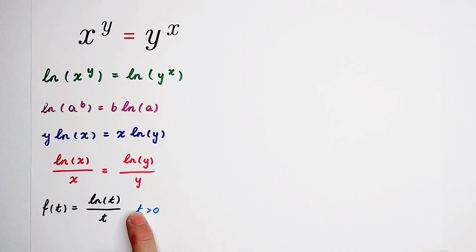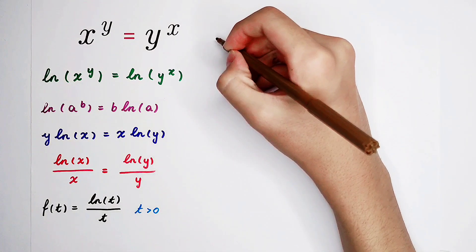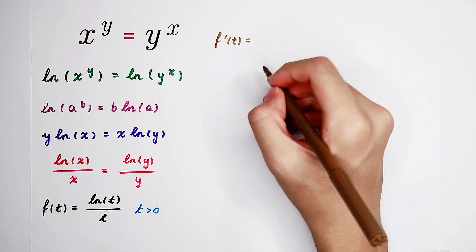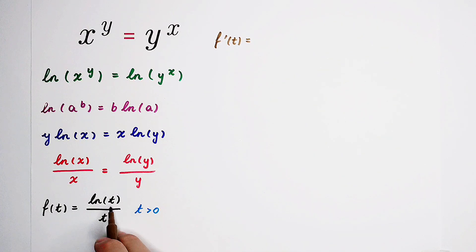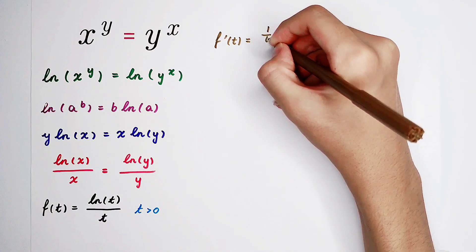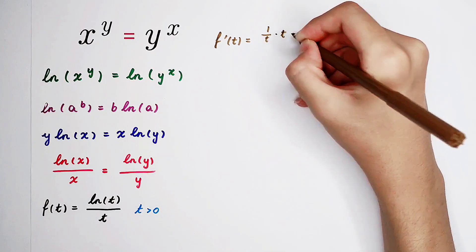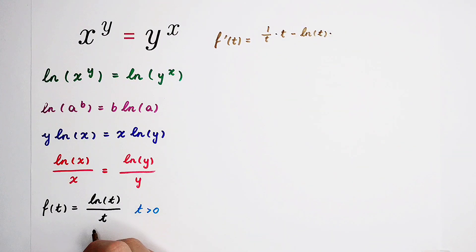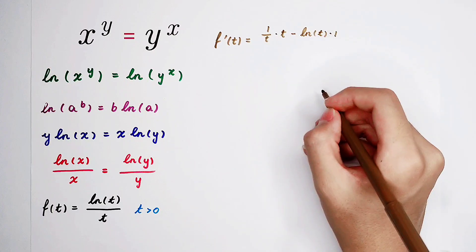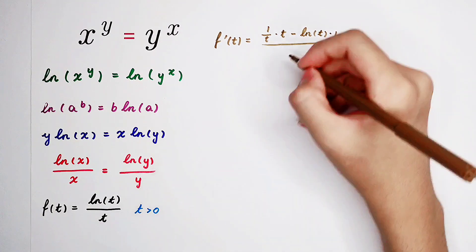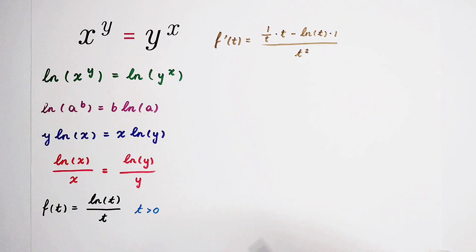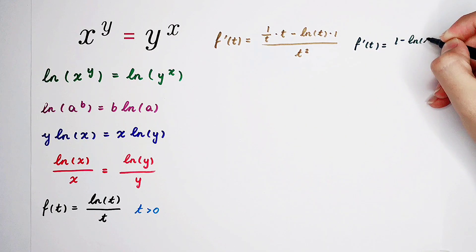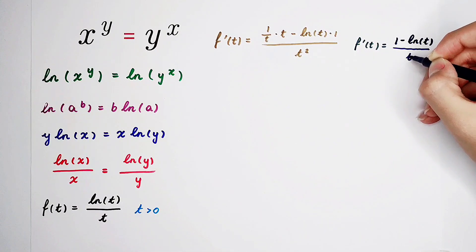To research this function, we can define f(t) = ln(t)/t and differentiate it. Using the quotient rule, the derivative is: the derivative of ln(t), which is 1/t, times the denominator, minus the numerator ln(t) times the derivative of the denominator (which is 1), all over the denominator squared t squared.